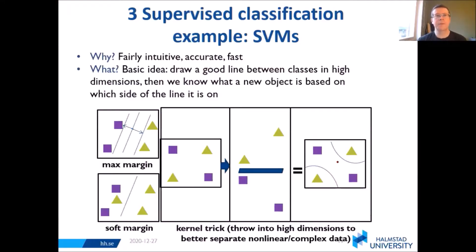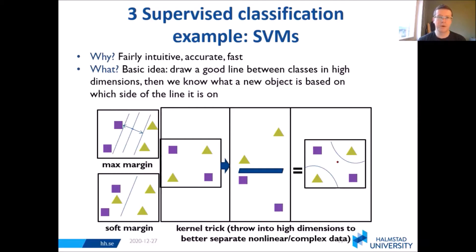Support vector machines. Why do we care about these? They're fairly intuitive, tend to be pretty accurate, and quite fast. You might wait a few hours for a solution with support vector machines, where you might wait days or months with deep learning or hidden Markov models.